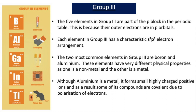In our last video, we learnt about the elements in Group 3 and we learnt that the 5 elements in Group 3 are part of the p-block in the periodic table. This is because their outer electrons are in p-orbitals. Each element in Group 3 has a characteristic S2p1 electron arrangement. The two most common elements in Group 3 are boron and aluminium. These elements have very different physical properties as one is a non-metal and the other is a metal. We also learnt that the +3 oxidation state is the most stable at the top of the group, and as you go down the group, the +1 oxidation state becomes more stable due to the inert pair effect. Finally, we learnt about the electron deficiency of compounds of boron and aluminium.